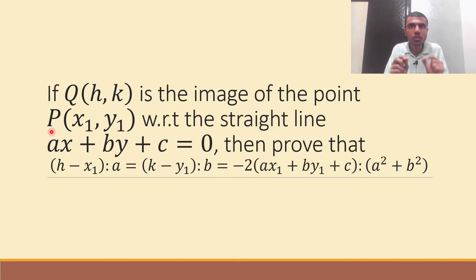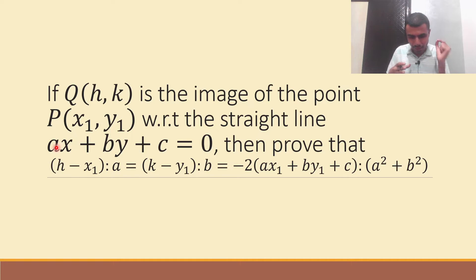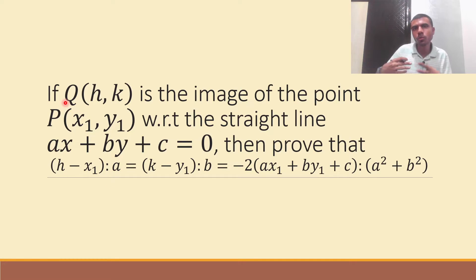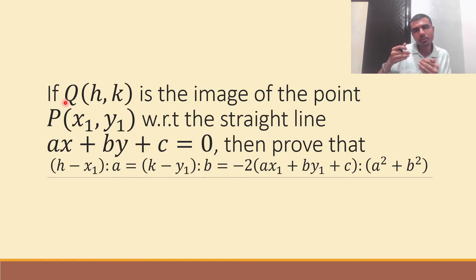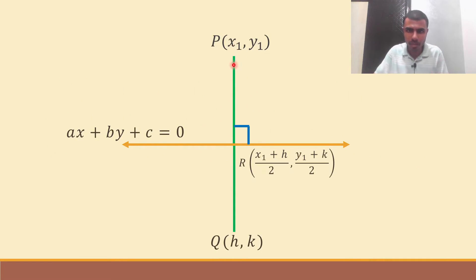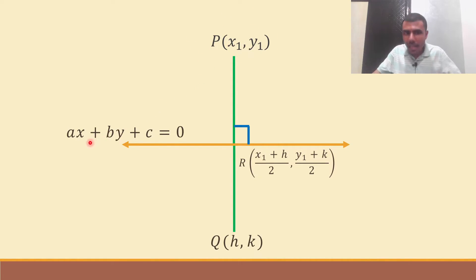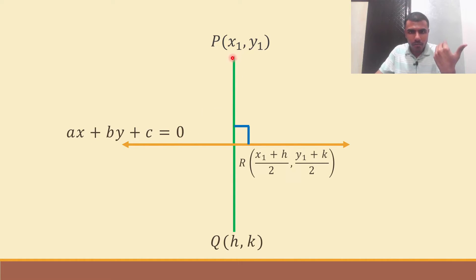P(x1, y1) is our original point. On the straight line ax + by + c = 0. So basically we have a point, we have a straight line. Now Q — how did we get Q? We get Q when we get the image of P(x1, y1) with respect to this straight line. Now see this diagram — I'm given a point P(x1, y1) and I have a line ax + by + c = 0.